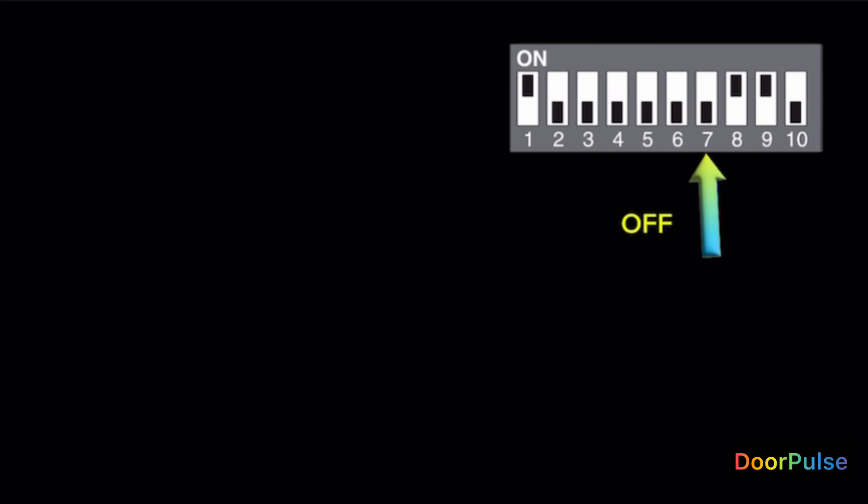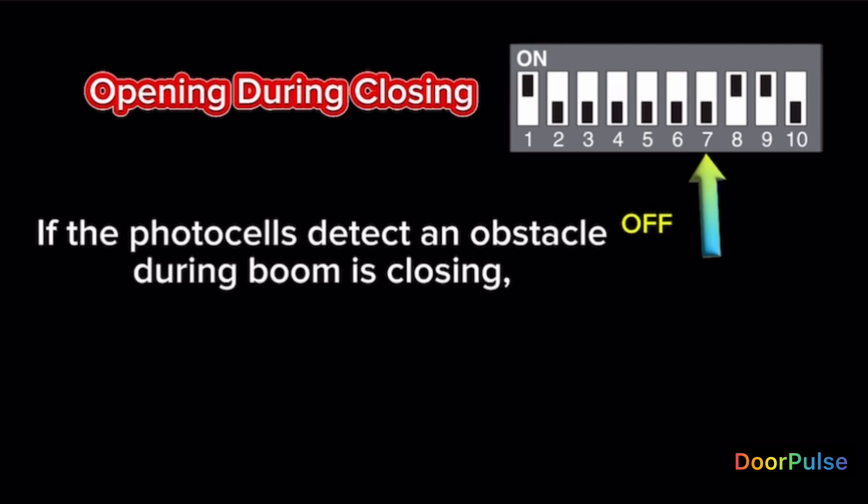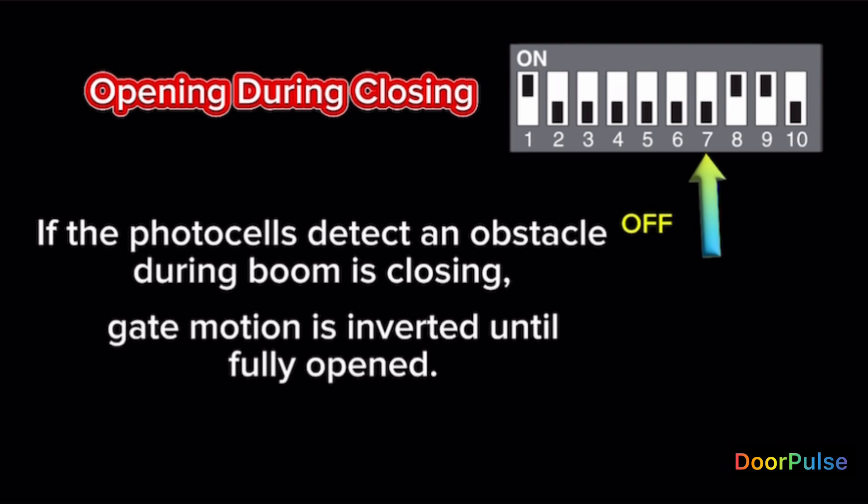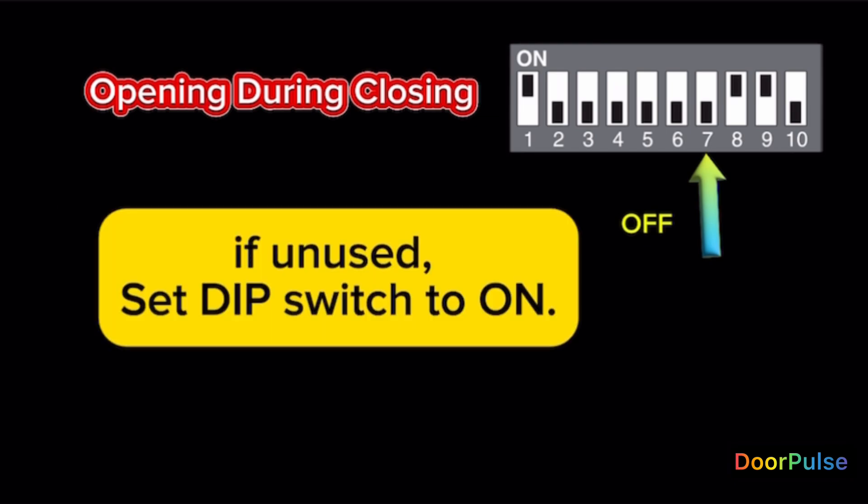Switch 7 OFF. Opening during closing. If the photocells detect an obstacle during boom is closing, gate motion is inverted until fully opened. Connect the safety device to terminals pin 2 and C1. If unused, set DIP switch to ON.